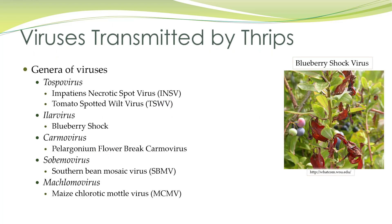Why do we care about thrips? Thrips spread viruses. The genera of viruses spread by thrips include Tospoviruses — impatiens necrotic spot virus and tomato spotted wilt virus. These names don't necessarily indicate the specific plants they'll attack; impatiens necrotic spot virus attacks many plants not even closely related to impatiens. Illivirus would be blueberry shock in our area. Carmovirus is pelargonium flower break carmovirus. Sobomovirus is southern bean mosaic virus — again, don't let the name fool you. Maclomovirus is maize chlorotic mottle virus.